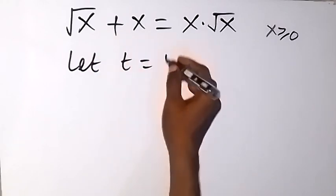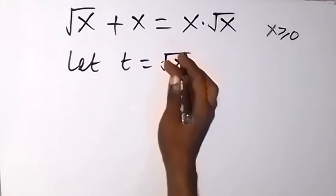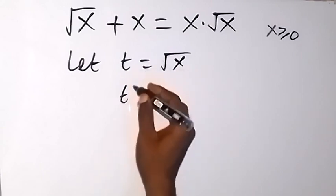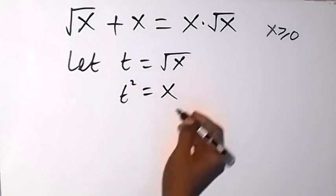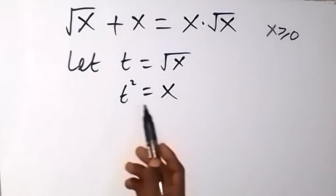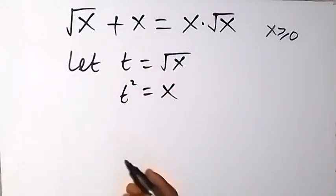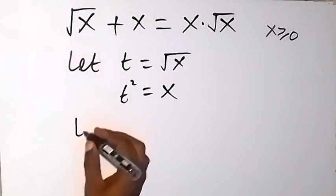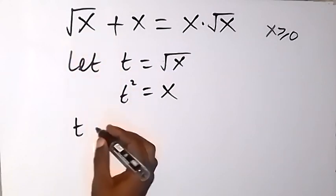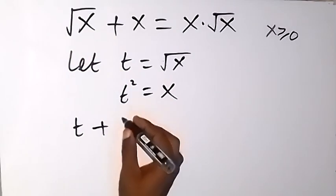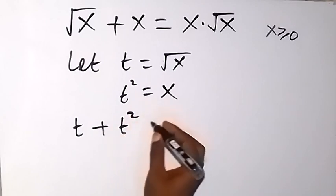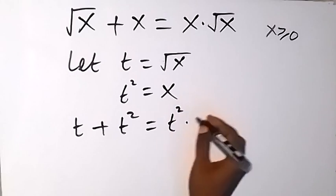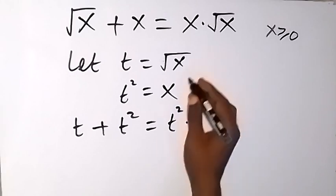Let t = √x, and from here when we square both sides, t² = x. So let's write in terms of t. The equation will then become: √x is t, plus x which is t², equals x which is t² multiplied by √x which is t.